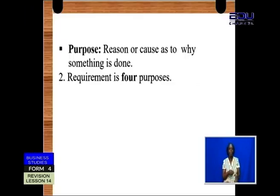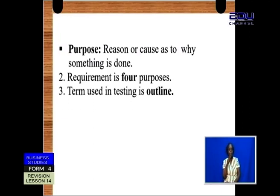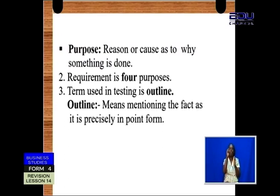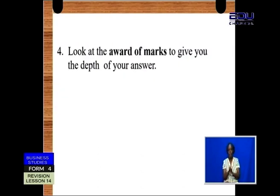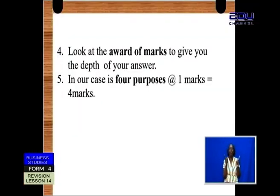The requirement is four purposes. The term used in testing is to outline. To outline means mentioning the fact as it is precisely in point form — we are not going to add anything extra, just mention the fact precisely in point form. The award of marks is four purposes, each at one mark, giving us a total of four marks.